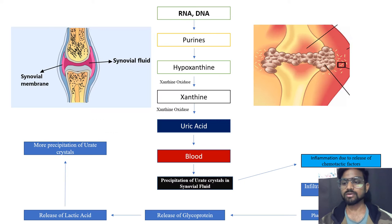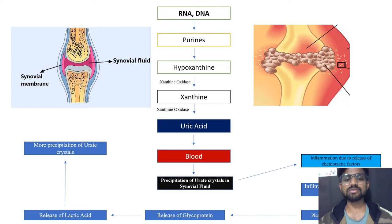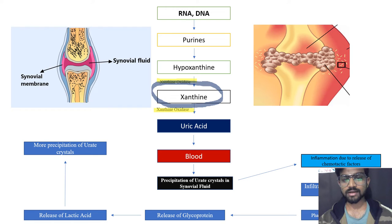Now let's move towards the pathophysiology. Purine is converted into hypoxanthine, and this hypoxanthine is then converted — in the presence of the enzyme xanthine oxidase — into xanthine. This xanthine is again converted into uric acid.